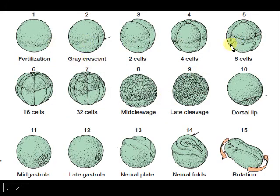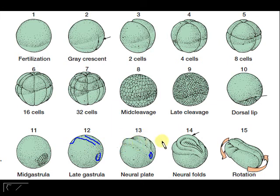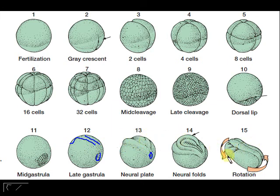This is a summary of how development will look for your toad. First it's fertilized and you form the grey crescent — the area where the sperm entered. Then you divide, a lot slower in the part where there's yolk, a lot faster in the animal pole. The blastopore forms, then you have late gastrula with the yolk plug. The blastopore is essentially the anus, because we are deuterostomes and the anus forms first. The cells then begin to pinch to form the neural plate and neural folds.